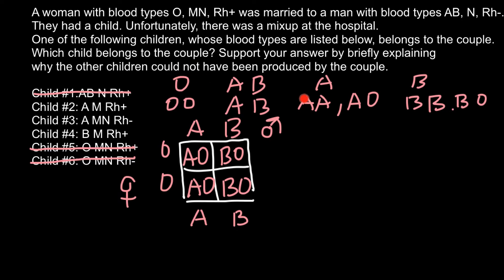By the way, in the ABO blood group system we have three alleles: A, B, and O. Alleles A and B are co-dominant, and allele O is recessive to both A and B. Moving to the second system: in the MN blood group system, both alleles M and N are co-dominant.